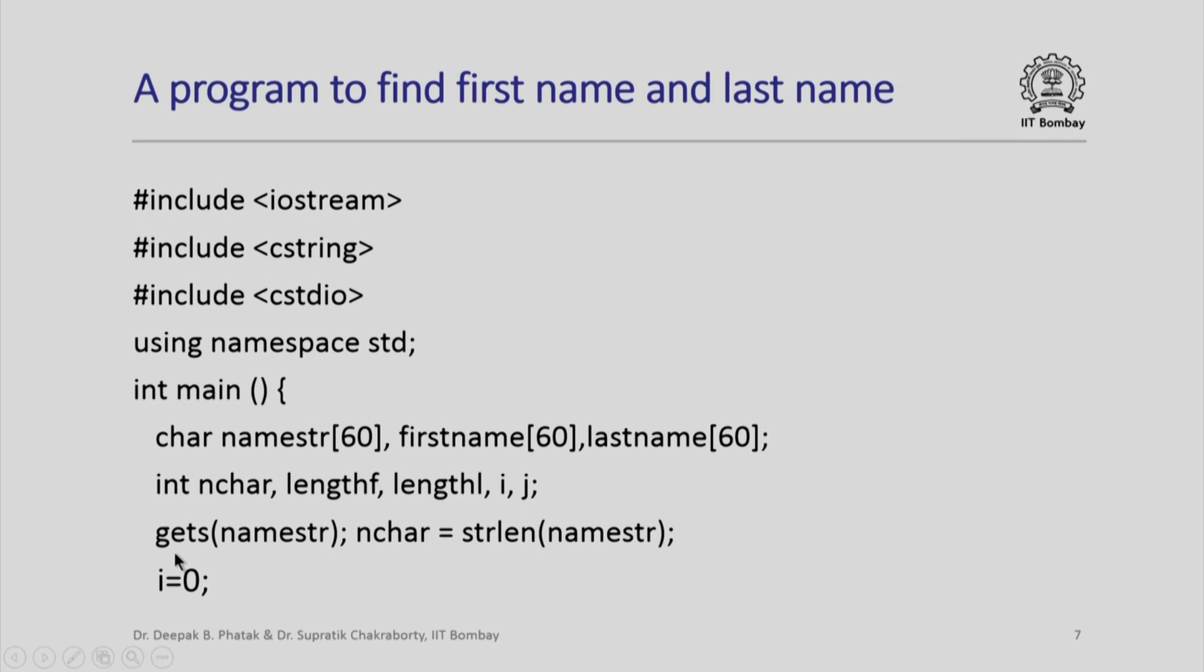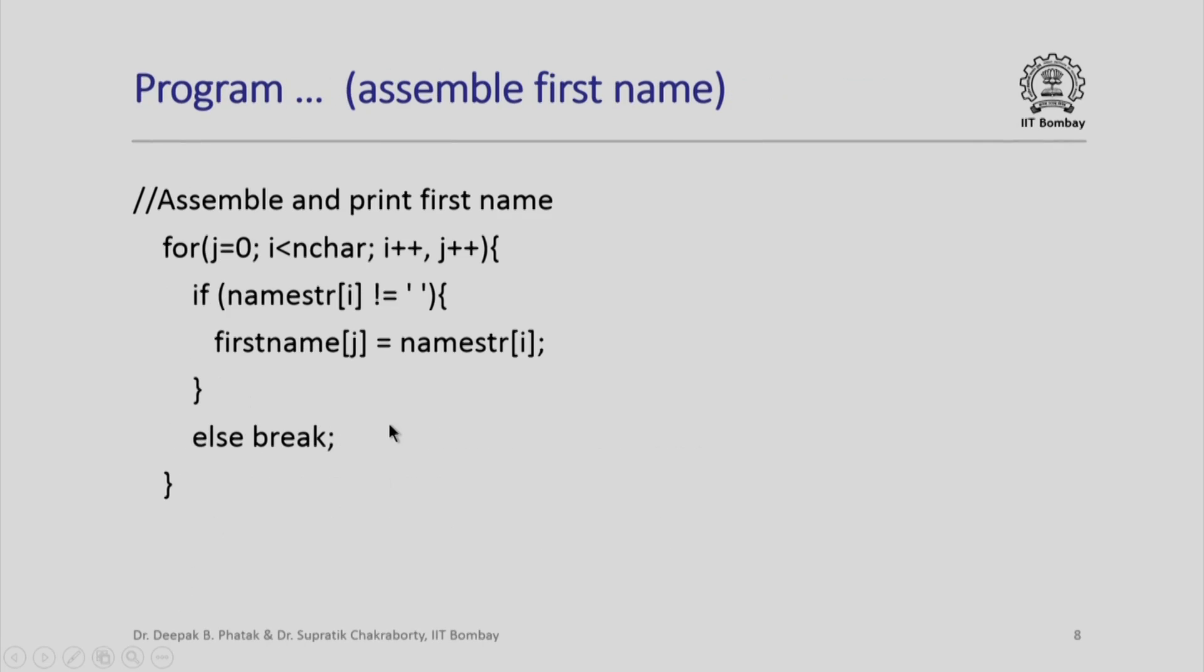First, we use gets function to read the namestring, and we calculate nchar as equal to the string length of namestring. We want to start the scan of this namestring array, so we start with i equal to 0. We will now assemble and print the first name. Notice the iteration that we set up for this: for j equal to 0, i less than nchar, i++, j++.